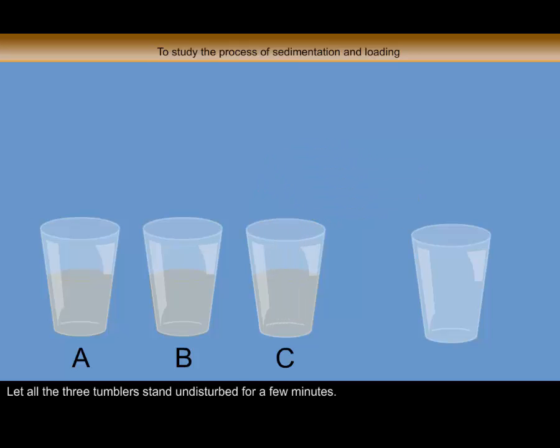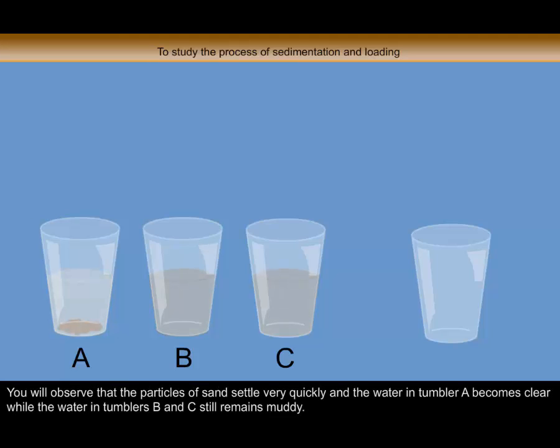Let all three tumblers stand undisturbed for a few minutes. You will observe that the particles of sand settle very quickly and the water in tumbler A becomes clear, while the water in tumblers B and C still remains muddy.